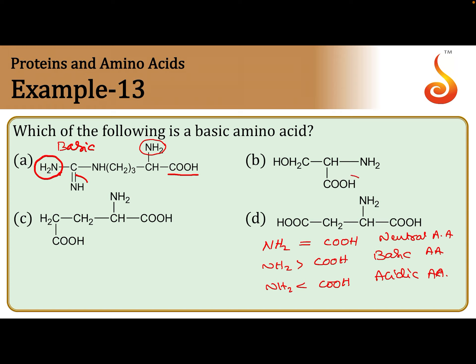In option B, there is 1 COOH and 1 NH2 — that is a neutral amino acid. In option C, there are 2 COOH groups and 1 NH2 group, so that is an acidic amino acid.